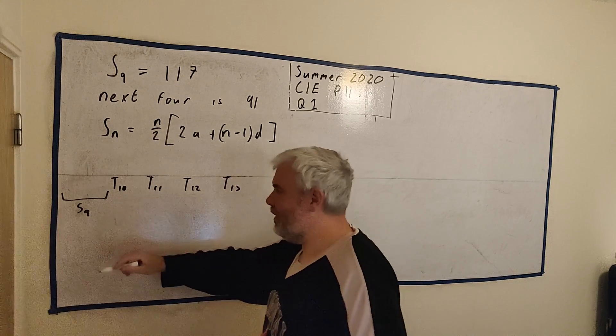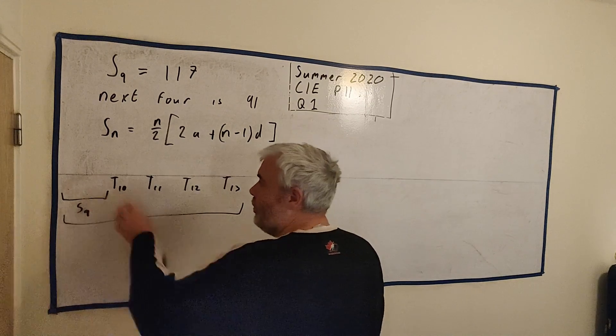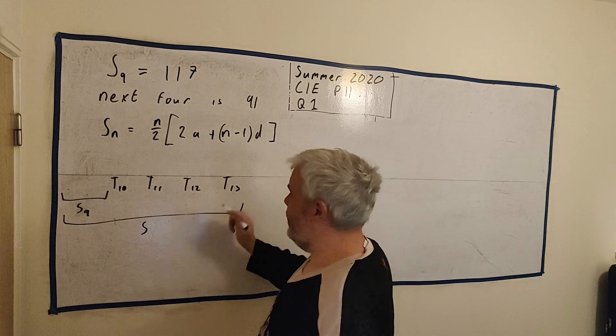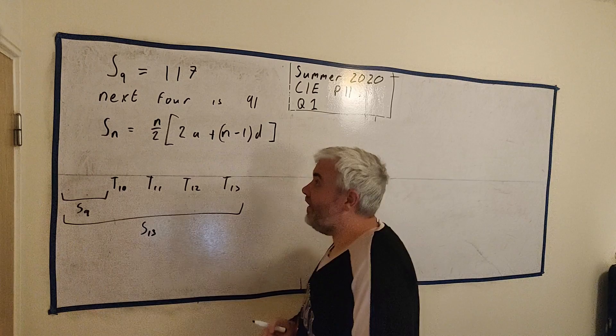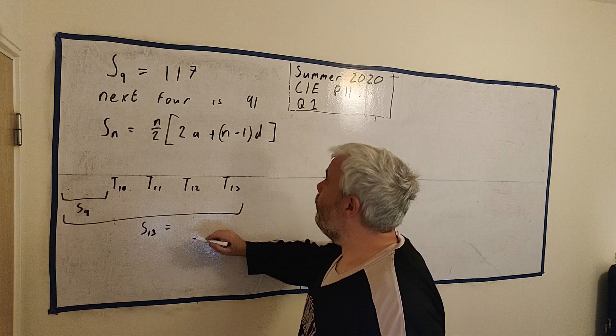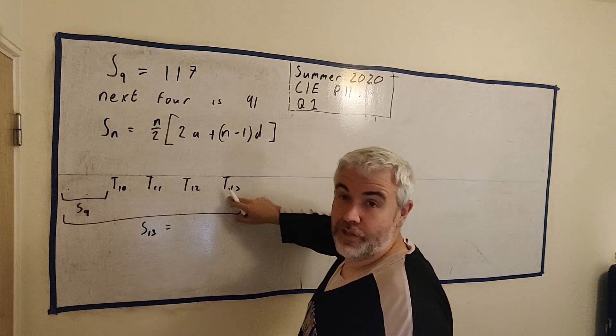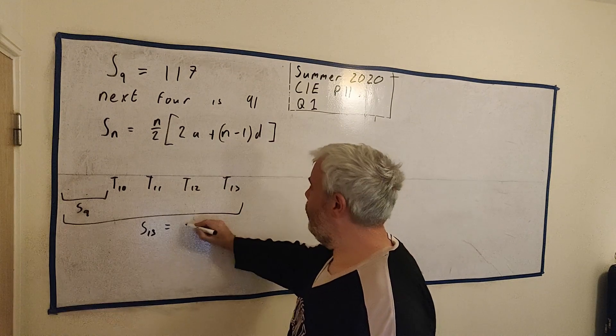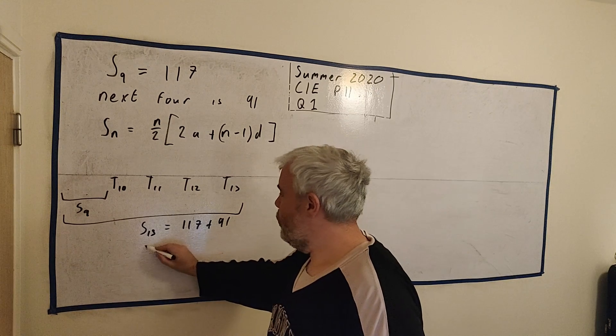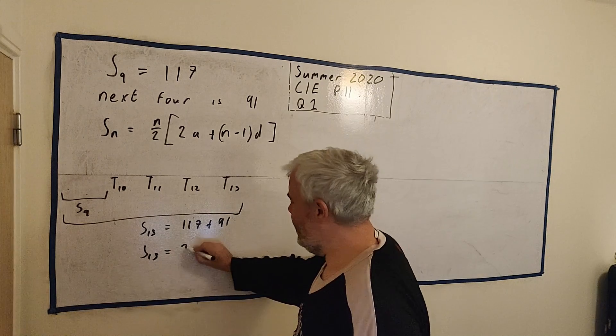What do these four add up to? And we know what the previous nine add up to. Because all of these are S₉. So here's the trick. And it is a bit of a trick for question one, to be honest. The sum of all of these, the first term, second, third, fourth, all the way up here, is actually S₁₃. And that we can get a formula for.